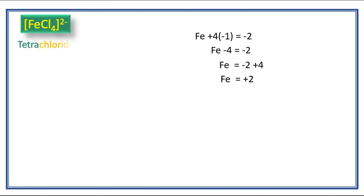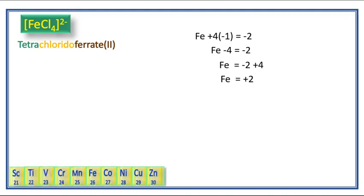The name of the complex is tetrachloridoferrate(II). Next we have to write the electronic configuration of the central metal atom. Here the central metal atom is iron. Its atomic number is 26. Its electronic configuration is [Ar] 3d6 4s2.